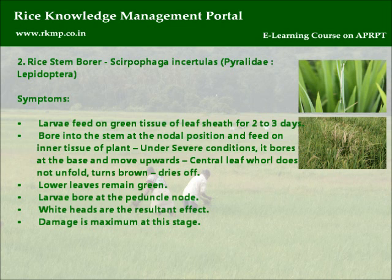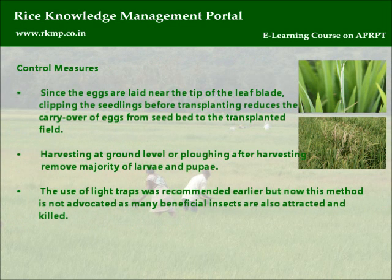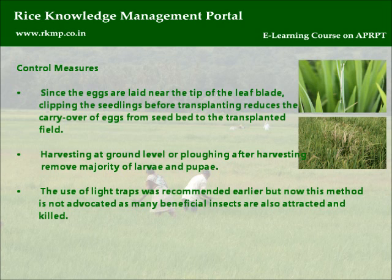Whiteheads are the resultant effect, and damage is maximum at this stage. Control measures: Since eggs are laid near the tip of the leaf blade, clipping seedlings before transplanting reduces carryover of eggs from the seedbed to the transplanted field. Harvesting at ground level or plowing after harvesting removes the majority of larvae and pupae. The use of light traps is no longer advocated as many beneficial insects are also attracted and killed.